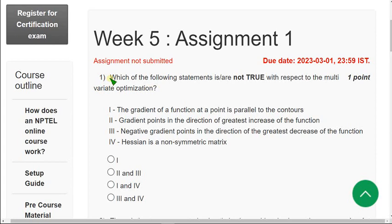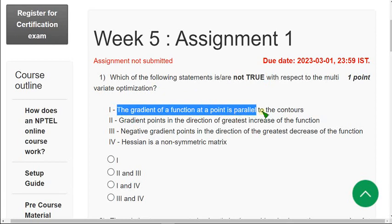Because if you skip, you may miss some content or if I change any solution, you may not be able to note the change. So do watch till the end. First question, which of the following statement is or are not true with respect to the multivariate optimization? Here they have given not true. It means which are the false statements here.